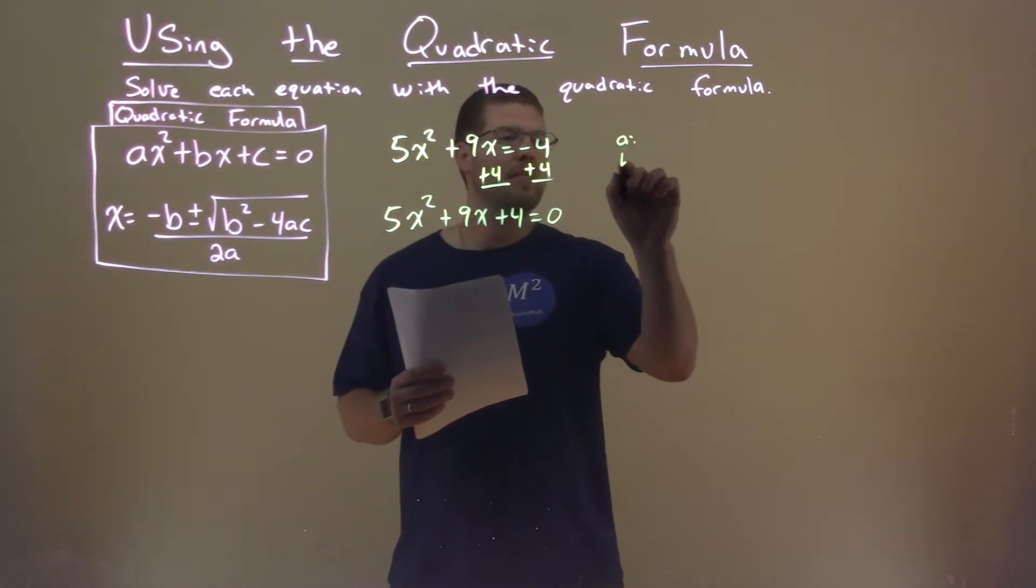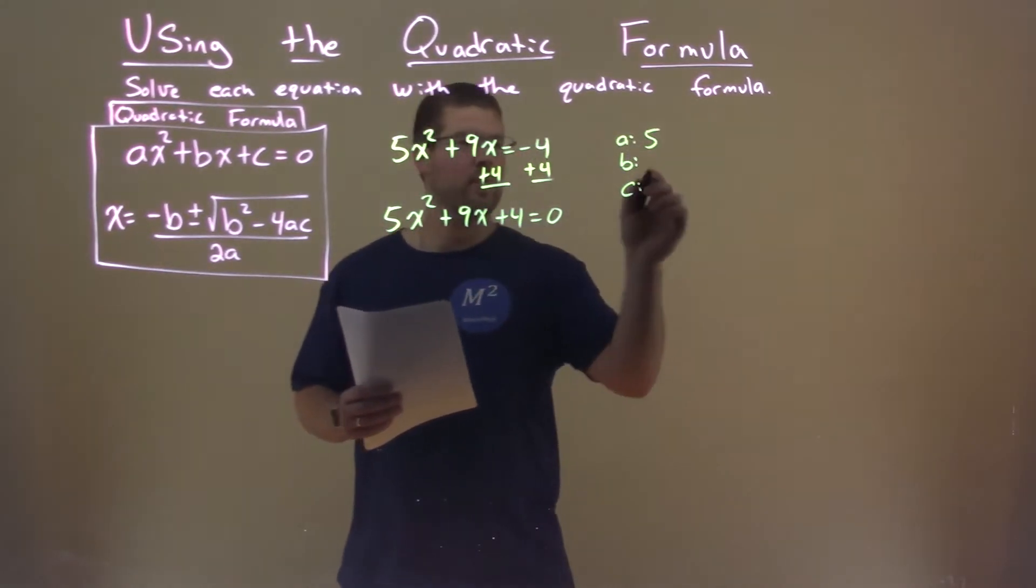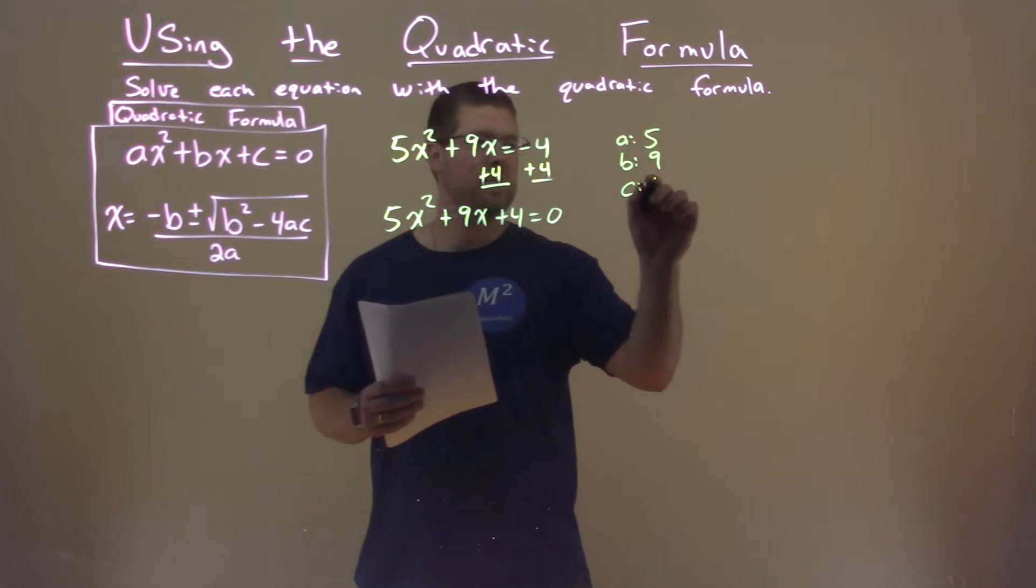So now I can find my a, my b value, and my c value. a value is 5, b value is 9, and c value is 4.